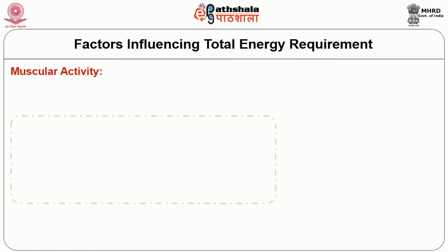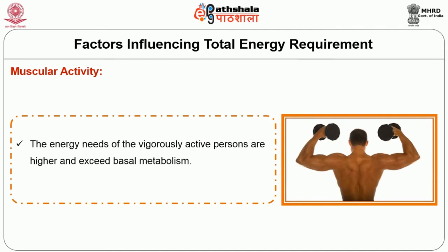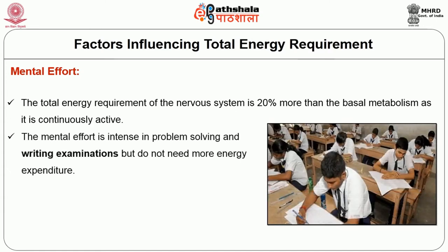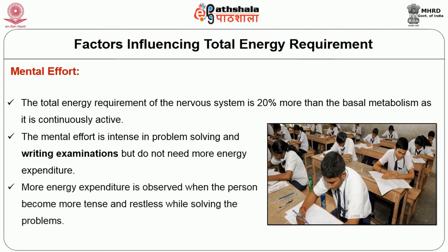Factors influencing total energy requirement: Muscular activity — the energy needs of vigorously active persons are higher and exceed basal metabolism; this varies with each individual and body size. Mental effort — the total energy requirement of the nervous system is 20% more than basal metabolism as it is continuously active. Mental effort is intense in problem solving and writing examinations but does not necessarily need more energy expenditure; more energy is observed when the person becomes tense and restless.